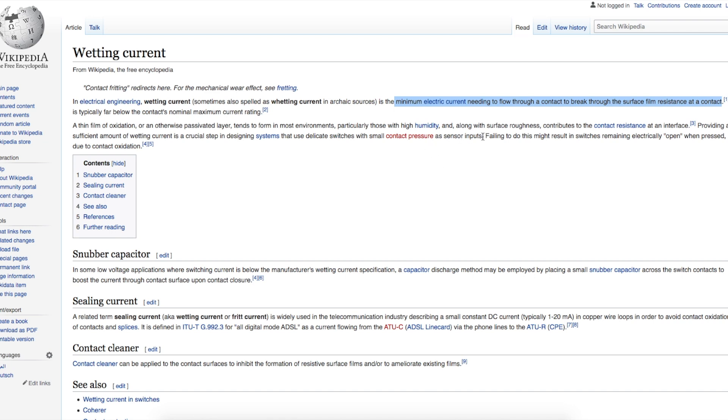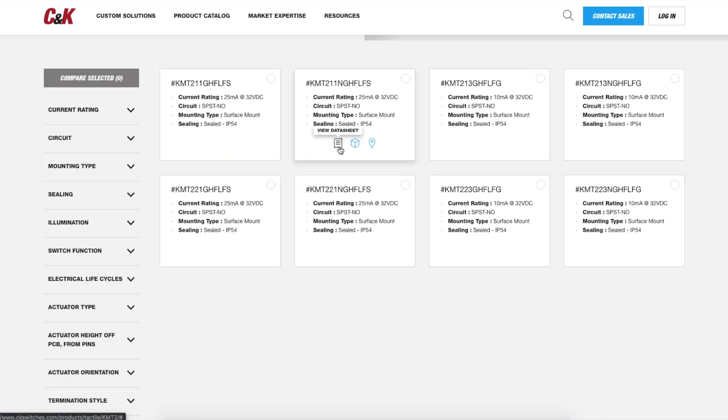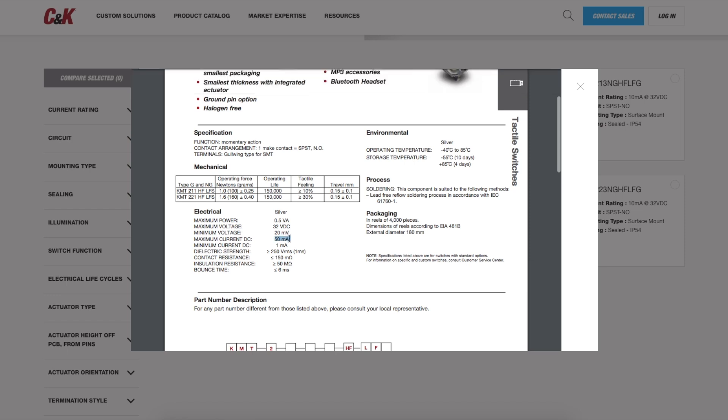If you don't provide enough current and you start getting this buildup, pressing the switch may not make electrical contact. So for example, if we look at some of these tactile switches, this particular miniature switch can handle up to 50 milliamps of current, and it also needs a minimum current of 1 milliamp.